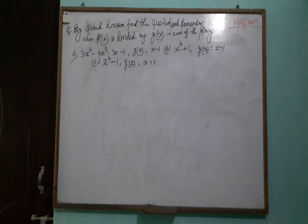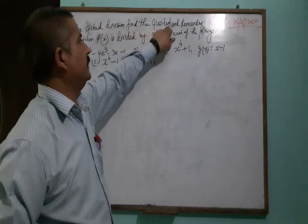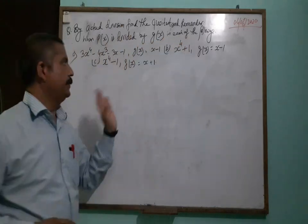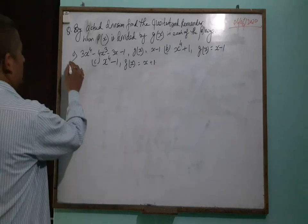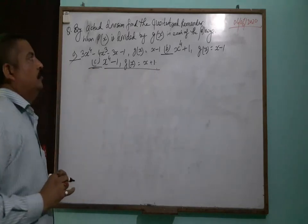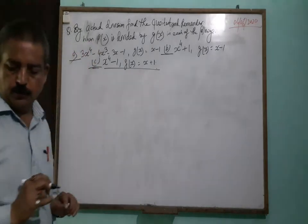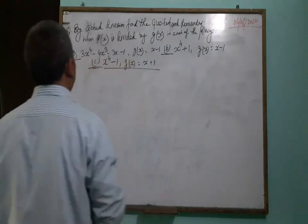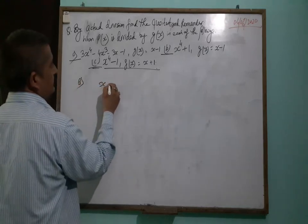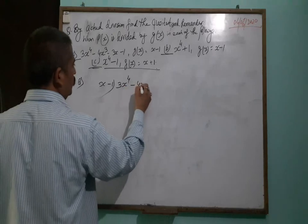Now another question: by actual division, find the quotient and the remainder when p(x) is divided by g(x) in each of the following. Three questions are given — A, B, and C. I will discuss one question and the rest two will be your homework. For question A, the divisor is x minus 1 and the dividend is 3x to the power 4 minus 4x cubed minus 3x minus 1.